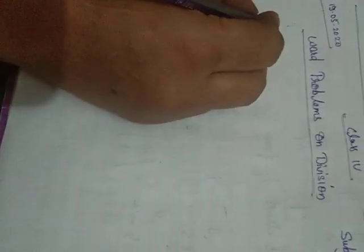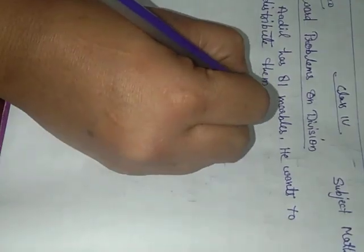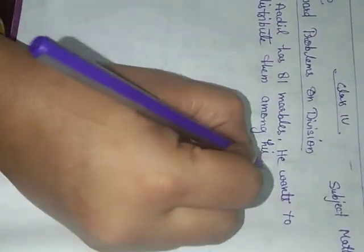Yesterday I told you about division. Now we have to start word problems on division. Let us take the example that Adil has 81 marbles. He wants to distribute them among his six friends.